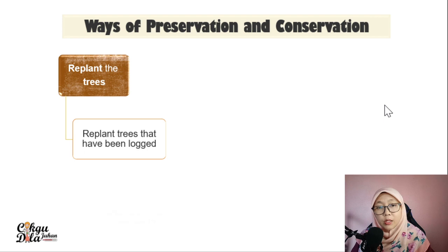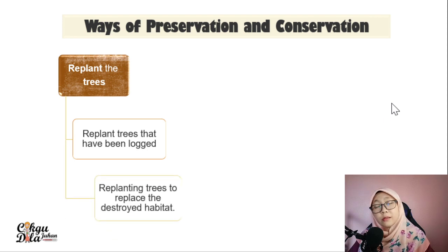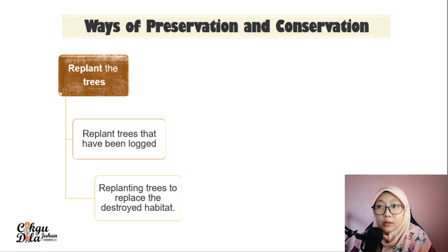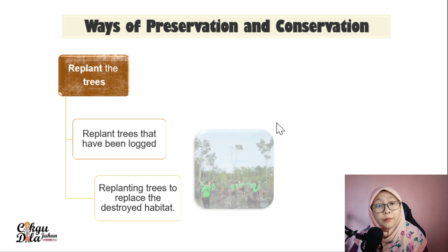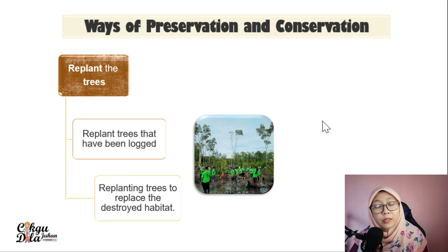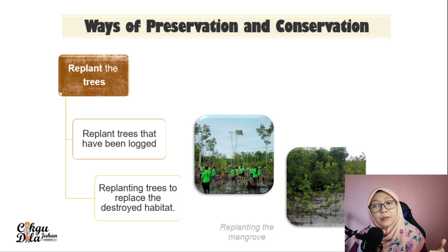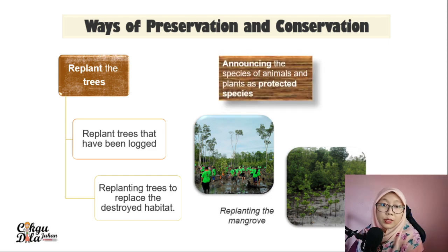Another way of preservation and conservation is to replant trees. Once a tree has been logged and cut, that area needs to be replanted with new trees to replace the destroyed habitat. So once we cut and use the trees, we replant so that animals have their habitat again. One example is replanting mangrove trees, like this activity shown here.